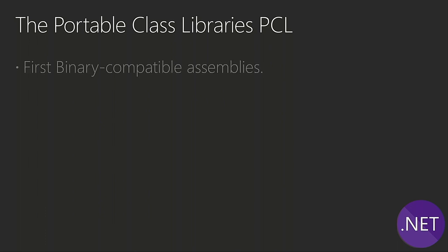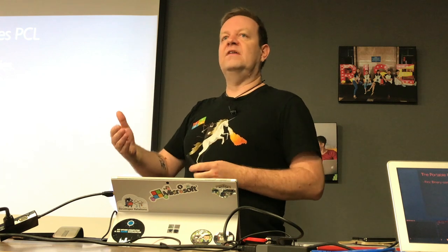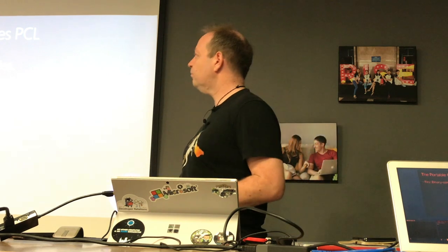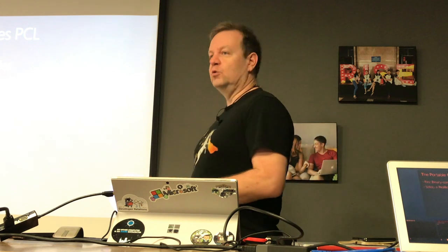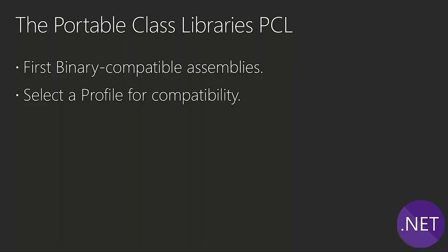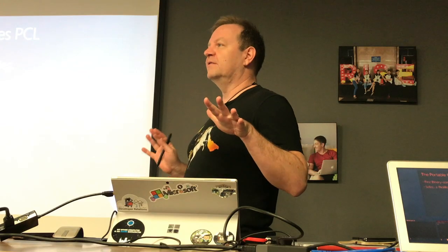Then in 2011 came Portable Class Libraries - PCL - and that was a big deal at the time because it was the first time we had binary compatible assemblies. Instead of sharing at the code file level and building twice, you could build a class library, add your files, build once, and then say: I want to target WPF, Silverlight, and later Xamarin, Windows 10, Windows Phone, etc. You would select a profile for the compatibility. Those profiles were really very bad - horrible to remember.